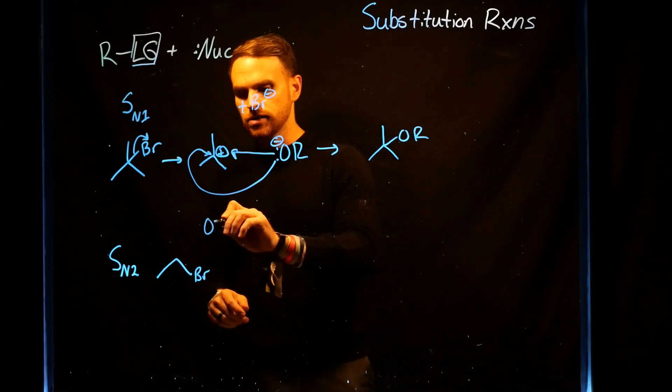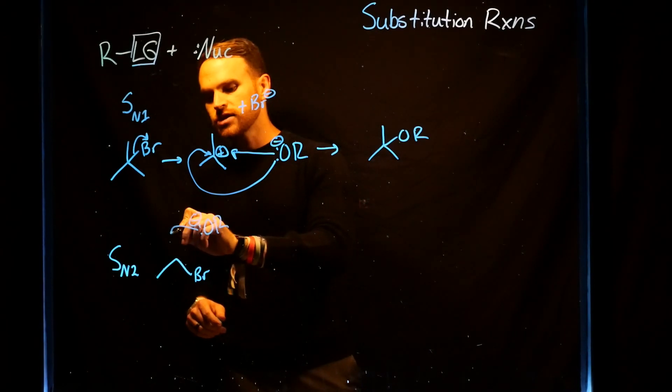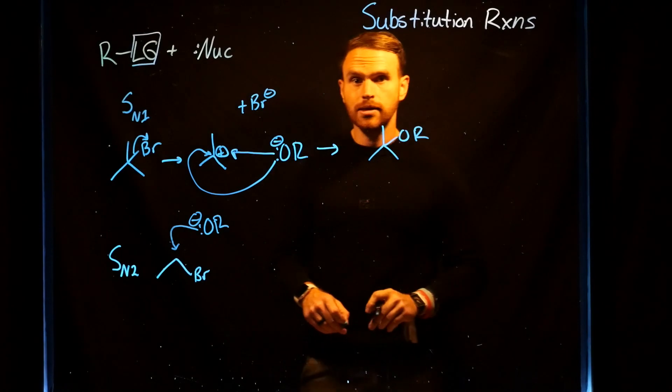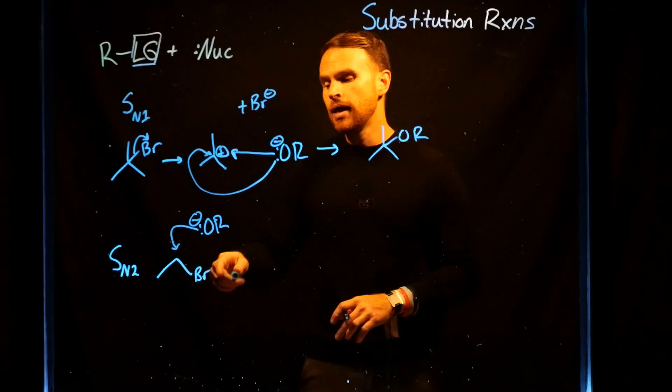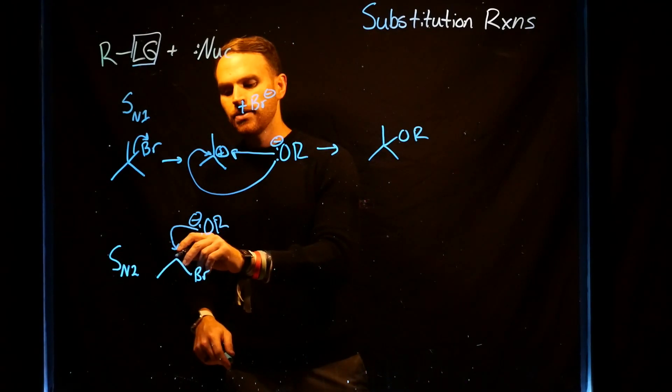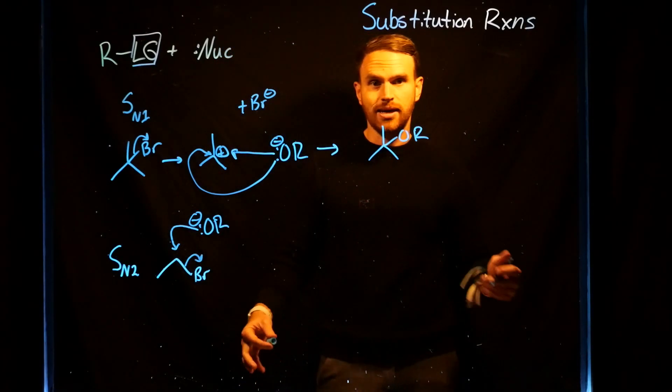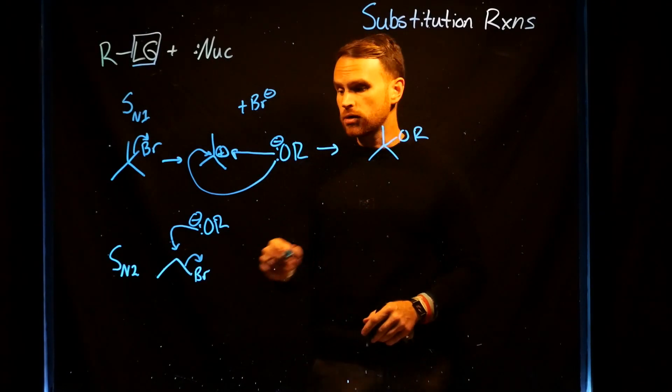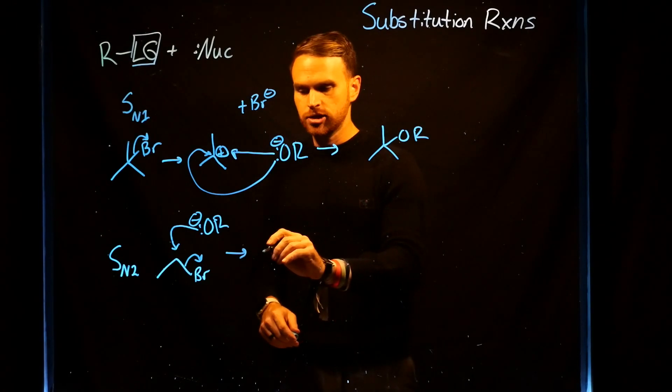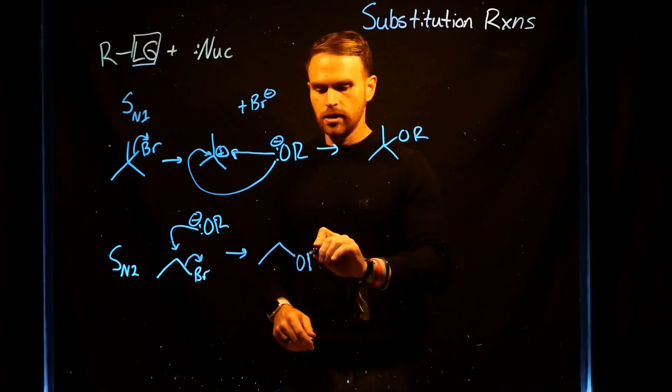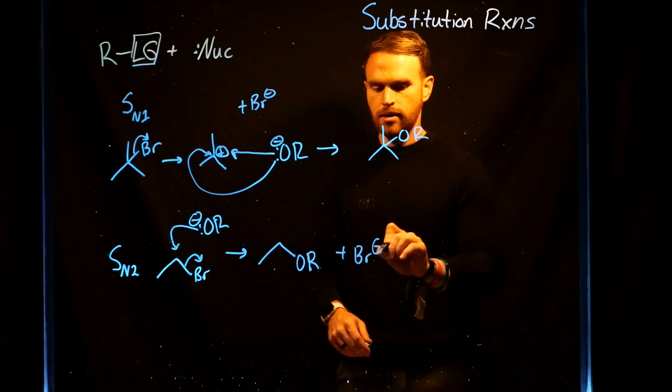Instead, what happens, let's assume we have our same OR minus, is that it is going to come in on the other side where the bromide is not, because remember, hydrogens are much smaller, so it can fit in there more nicely. It is going to come in, and when it attacks this carbon, what happens simultaneously is that the bromide gets kicked off. Notice that both steps are happening at once, which is why we call it an SN2 reaction. That SN2 reaction generates our newly substituted hydrocarbon and your bromide anion.